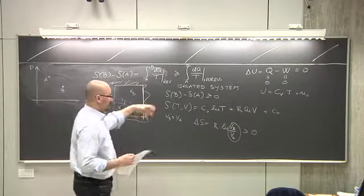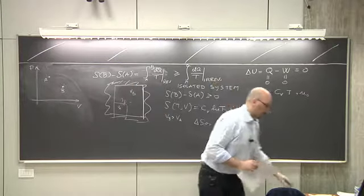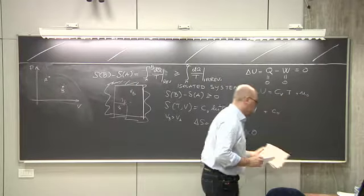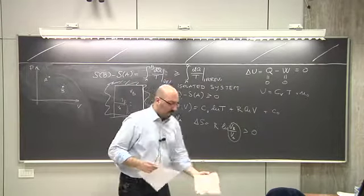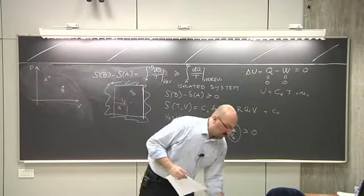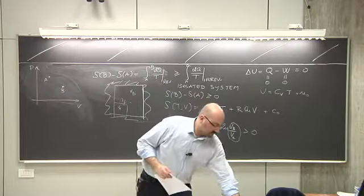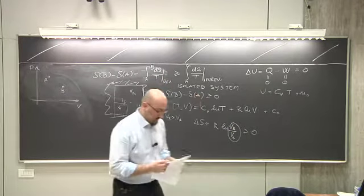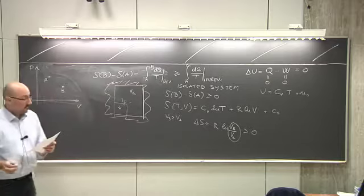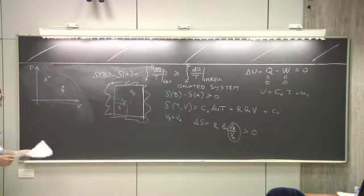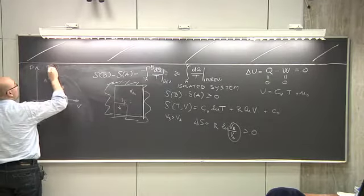For an isolated system which does not perform any work and does not exchange heat — completely isolated — the system goes to a state of maximum entropy. If the system can perform a transformation that raises the entropy, it does it. This is just repeating what I said in the second lecture.